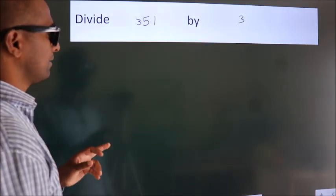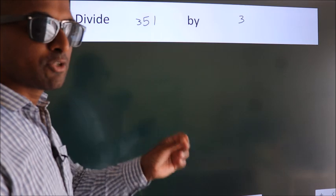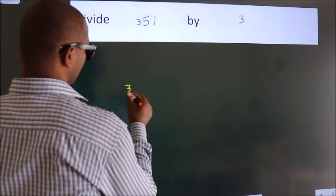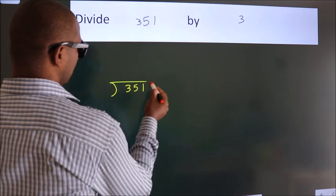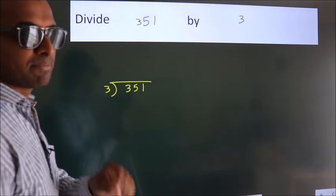Divide 351 by 3. To do this division, we should frame it in this way. 351 here, 3 here. This is your step 1.